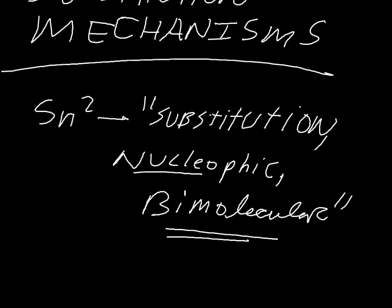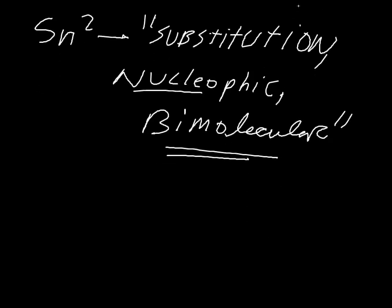So to start out let's talk about SN2, and SN2 stands for substitution nucleophilic bimolecular. The bimolecular comes from there being two species in the rate determining step, although you might remember if you've had this in class there is only one transition state in SN2.